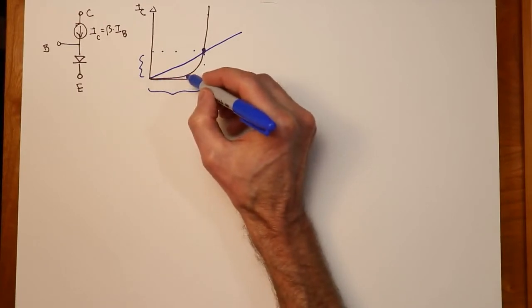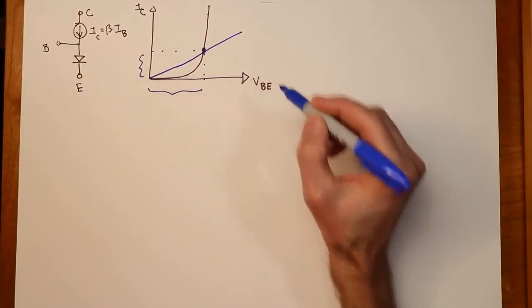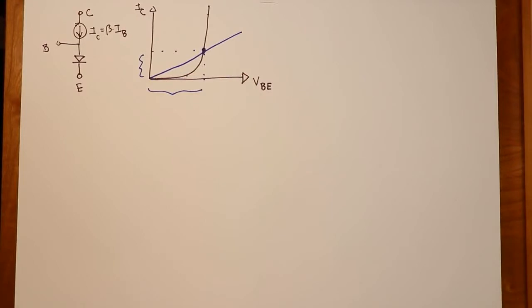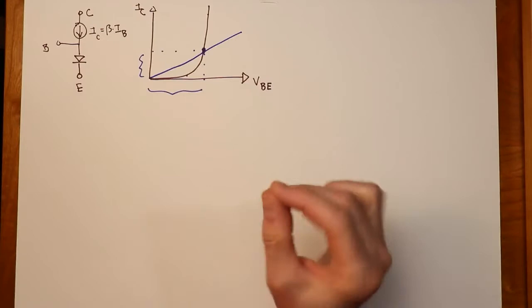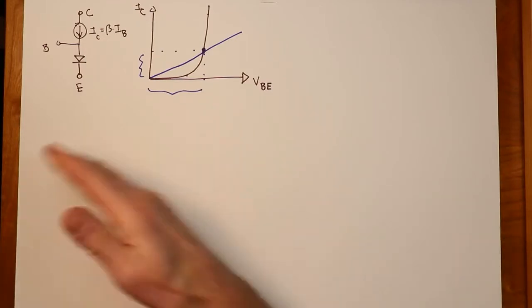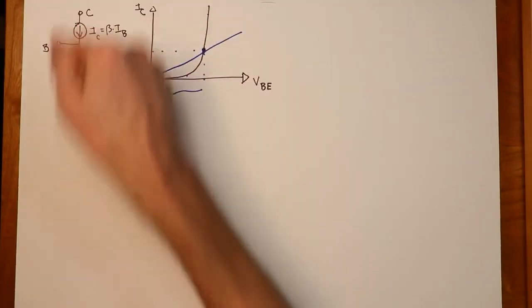If we were down here somewhere, much flatter curve, much larger resistance. So that would be the DC case. You can think of that as just being sort of a resistor that depends on what the actual current is.